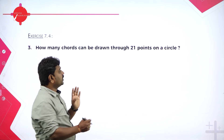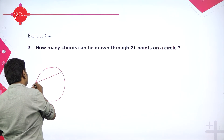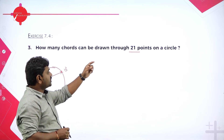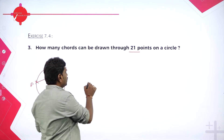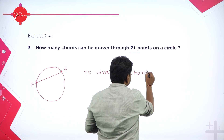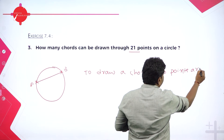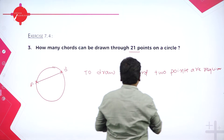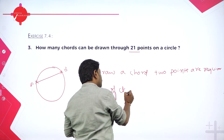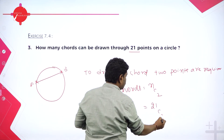How many chords can be drawn through 21 points on a circle? A chord is a line joining a minimum of two points. So to draw a chord, two points must be combined. With 21 points on the circle, to draw a chord we need 2 points at a time. Therefore, number of chords equals 21C2.